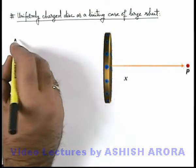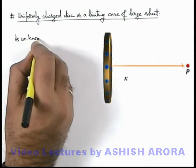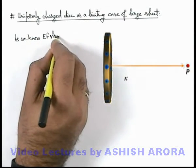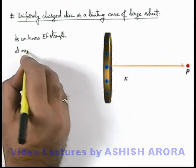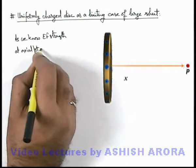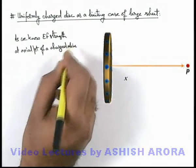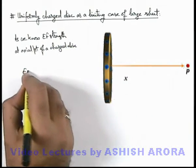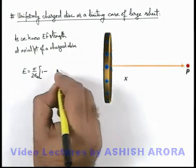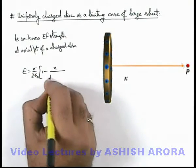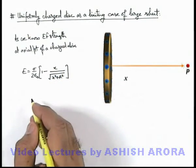We can directly write, as we already know, that electric field strength at an axial point of a charged disc is given as E equals sigma by 2 epsilon not, 1 minus x by root of x square plus r square. This we already studied in previous articles.